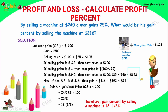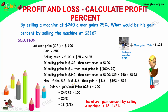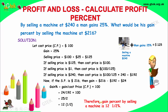So the cost price is $192. The gain is selling price minus cost price: 240 minus 192 equals $24. The gain percentage is 24 divided by 192 multiplied by 100, which gives 12.5%. The gain percentage by selling the machine is 12.5%.